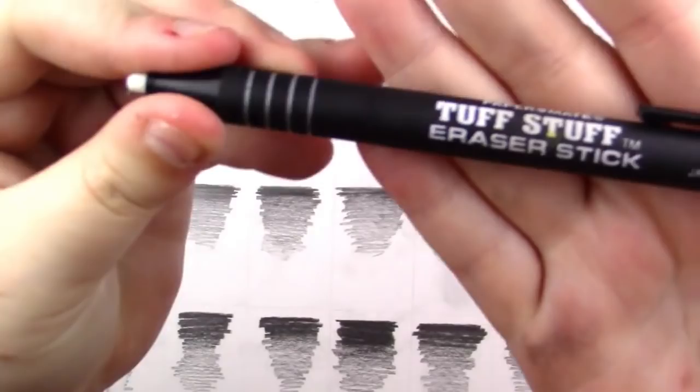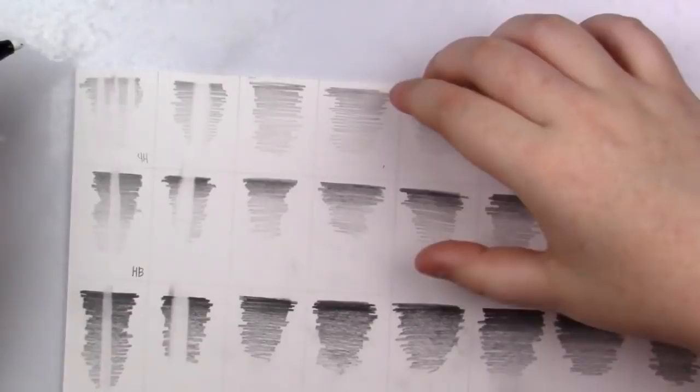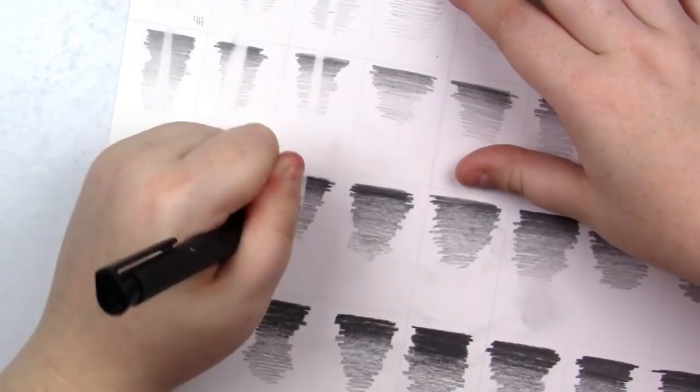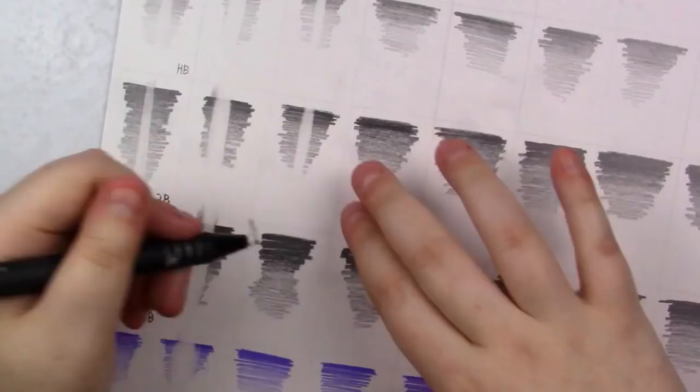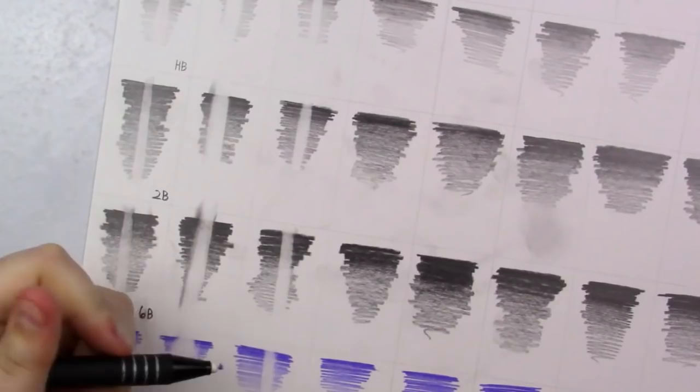Next up is the Papermate Tough Stick Eraser Stick. This one is really, really great for detail, as you could probably imagine, and it really doesn't leave behind a lot of eraser shavings. However, they kind of tend to ball up on the tip of the eraser, which is quite frustrating. This one didn't do too bad until you hit that 6B pencil, and that's what tripped up a lot of these erasers, to be honest. It didn't do too bad, though, and I was pleasantly surprised. However, I had to work really hard to get this to erase for the 6B, but other than that, it did pretty good, and I'm going to give this one a C-plus because it's good for detail, and it did pretty well, let's be honest.